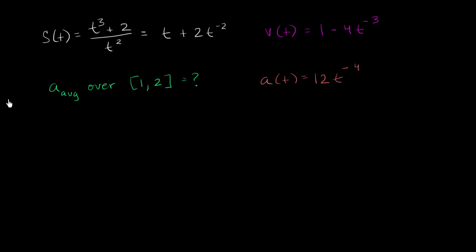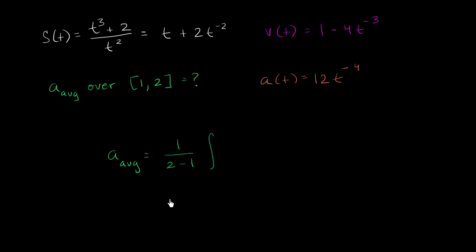Now to find the average value, all we have to do is take the definite integral of the acceleration over the interval and divide by the width of the interval. So it's 1 over (2 minus 1), which simplifies to 1, times the definite integral from 1 to 2 of a(t), which is 12t to the negative 4, dt.